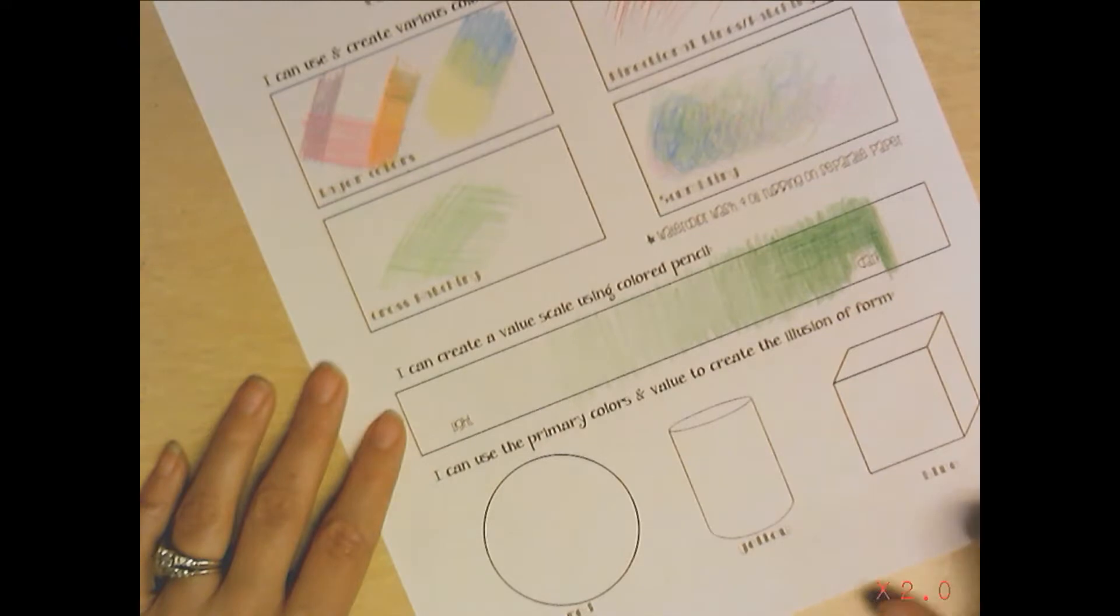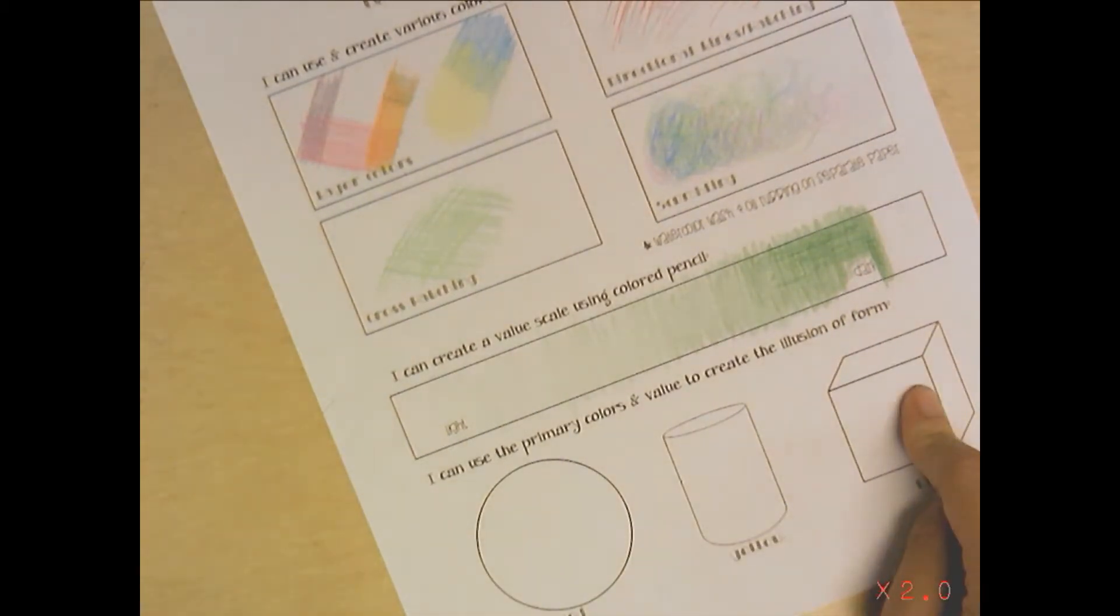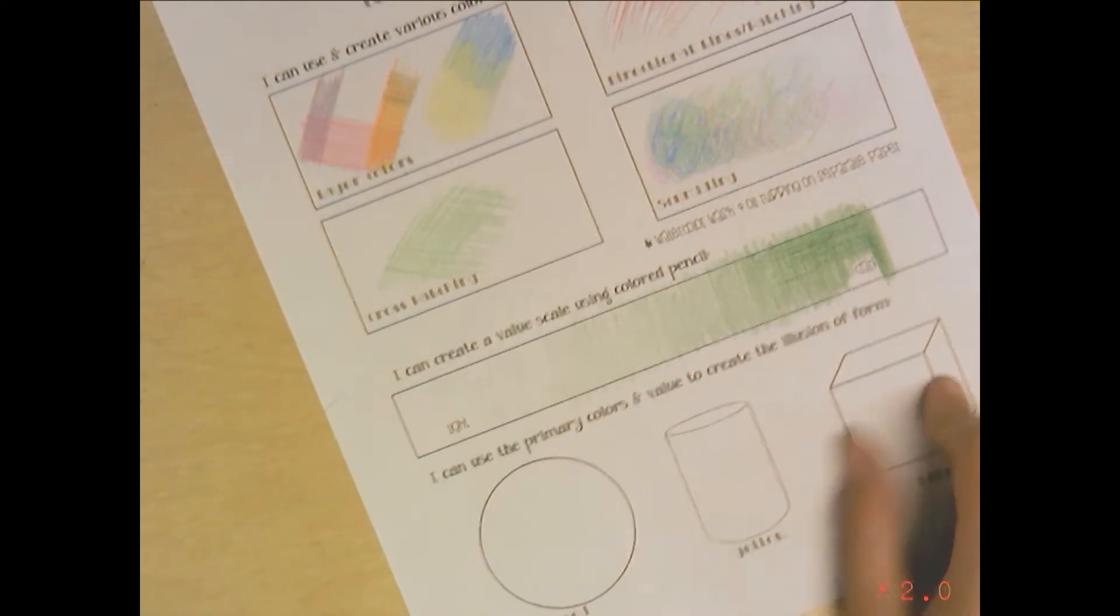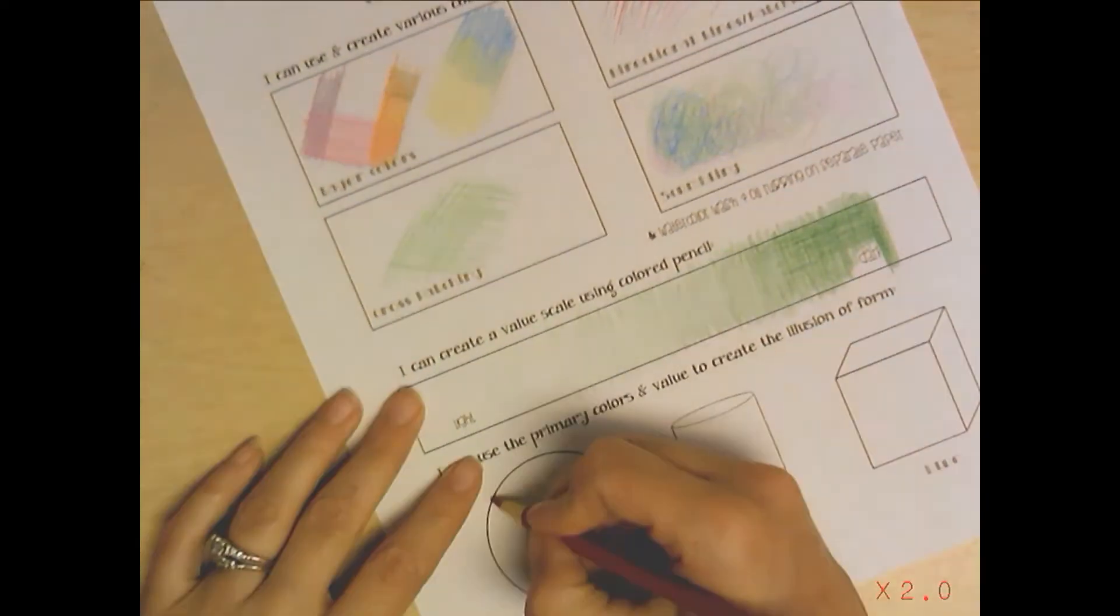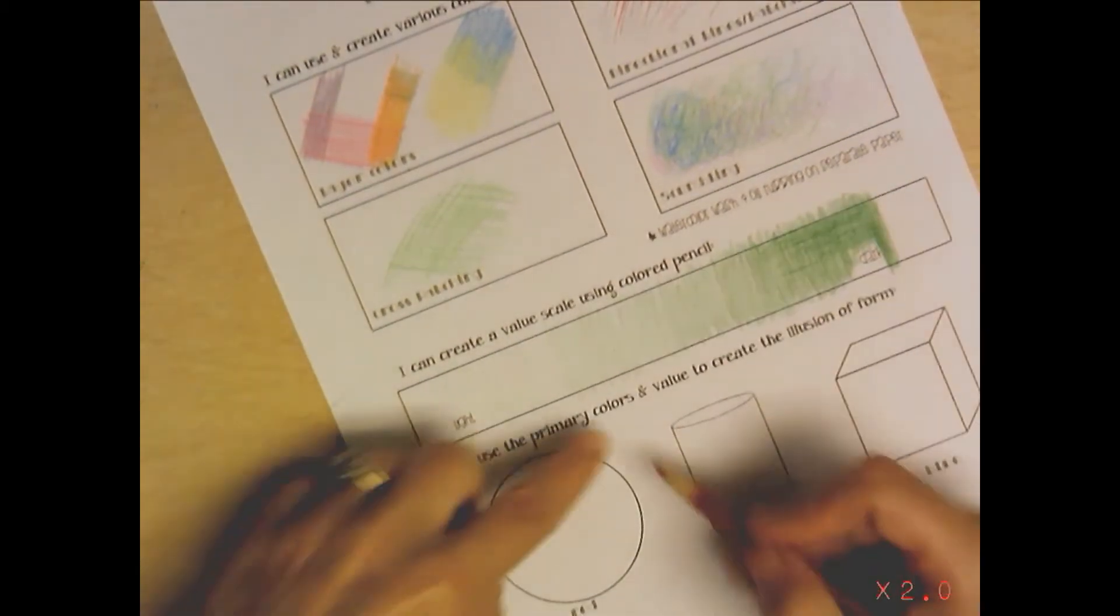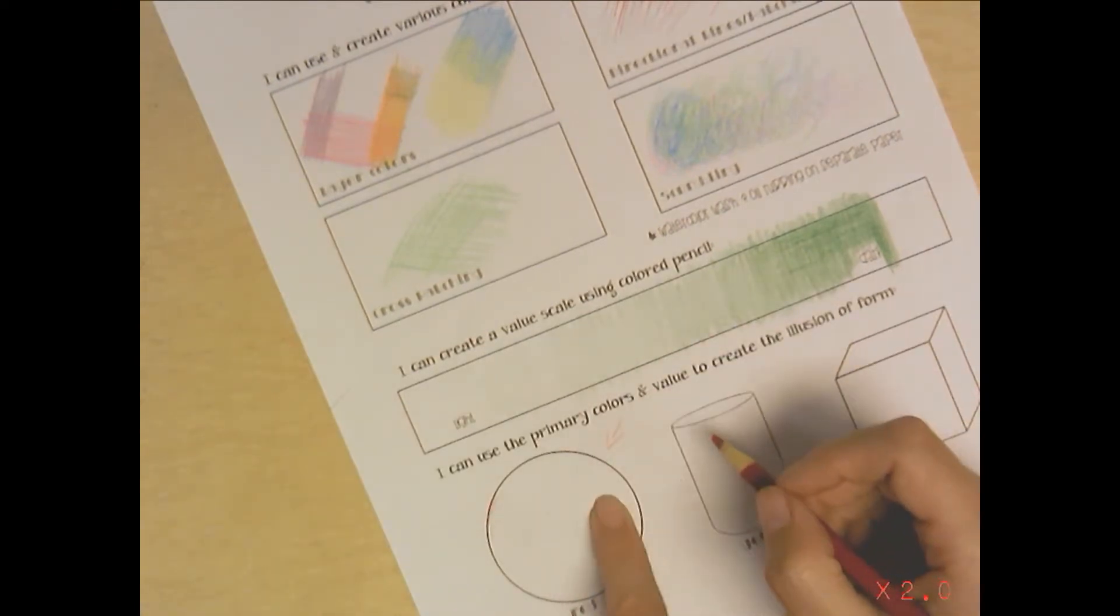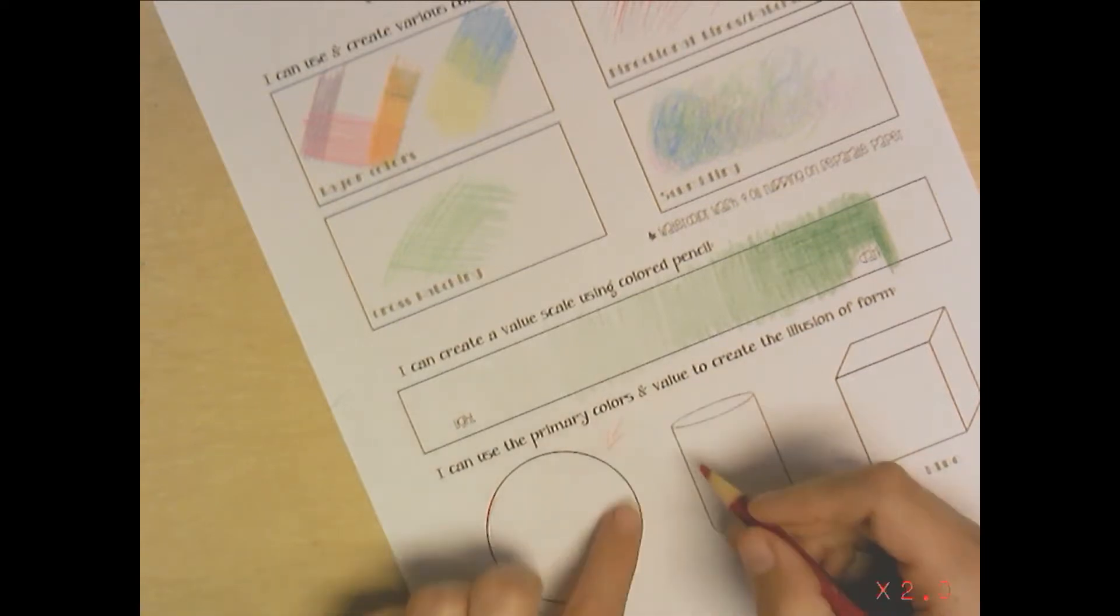We're going to use this idea of value and apply it down here to these forms. It says use the primary colors and value to create the illusion of form - illusion, it's playing a trick on our eye. These things are not three-dimensional, we're drawing them to make them look 3D. I can't actually pick these up, they're flat. What I'm going to do - you want to pick where your light is coming. Maybe my light is coming from this direction. It's going to hit this circle here, maybe right around here. This is going to be lighter, this is going to be darker.